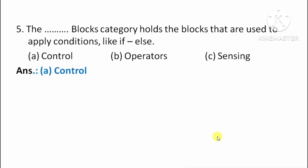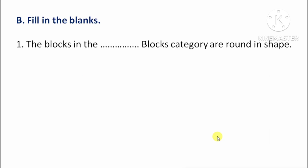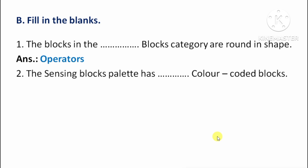Section C: Fill in the blanks. First question: The blocks in the Operators blocks category are round in shape. Kaunse block category ke blocks shape mein round hote hain? Answer: Operators. Next question: The Sensing blocks palette has color-coded blocks. Sensing blocks palette ke blocks kaunse color se coded hote hain? Answer: Light blue.